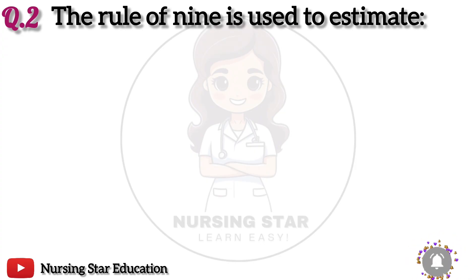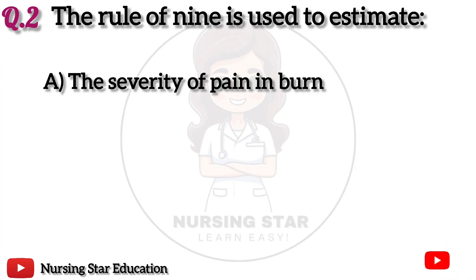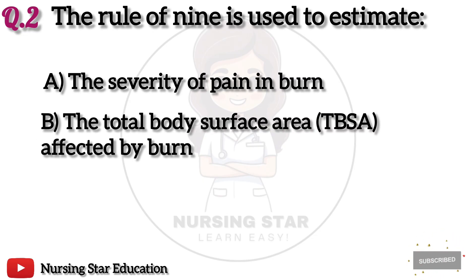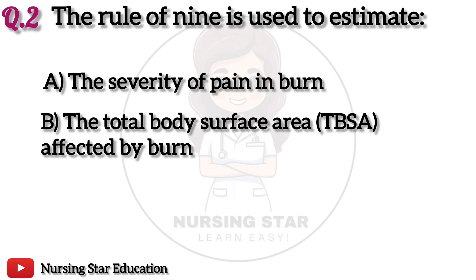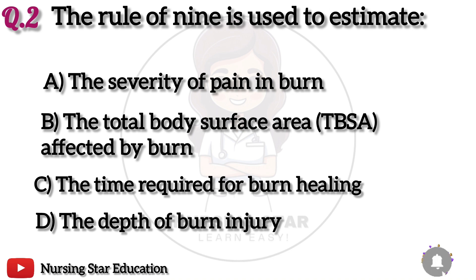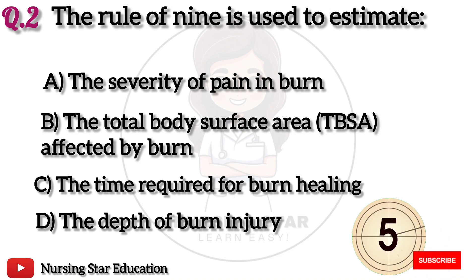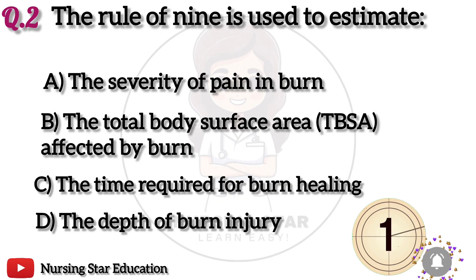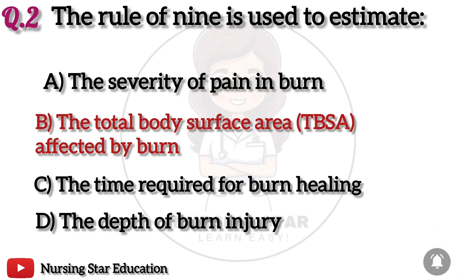Question 2: The rule of nines is used to estimate. Option A: The severity of pain in burns. B: The total body surface area (TBSA) affected by burns. C: The time required for burn healing. D: The depth of burn injury. The correct answer is B: The total body surface area (TBSA) affected by burns.